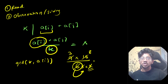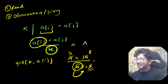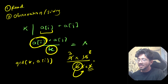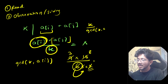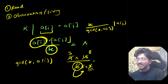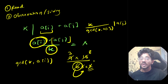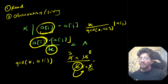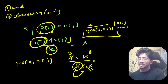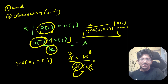Since gcd(k, a[i]) is the greatest common factor of both, if we divide both by it, whatever is left of k must be present in a[j] for full cancellation. So we can say: k / gcd(k, a[i]) must divide a[j]. Whatever factors are cancelled by a[i] from k — the remainder of k after that division must divide a[j] for the product to be divisible by k. Therefore, for a particular a[i], the valid values of a[j] are exactly the multiples of k / gcd(k, a[i]).